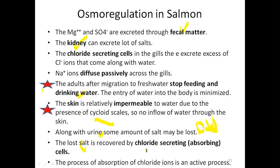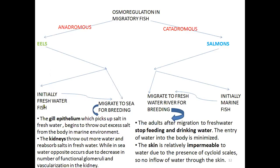The chloride ions have to be actively reabsorbed because it is happening against the concentration gradient. Since it goes against the concentration gradient, it must be an active process — so reabsorption of chloride ions is an active process.